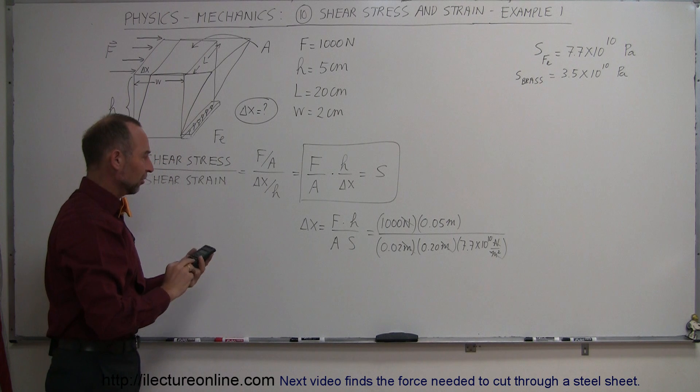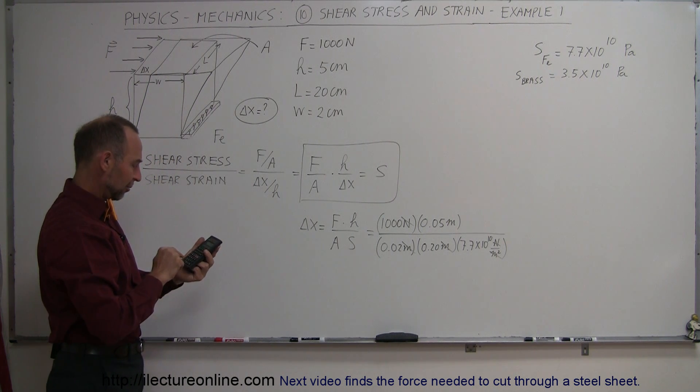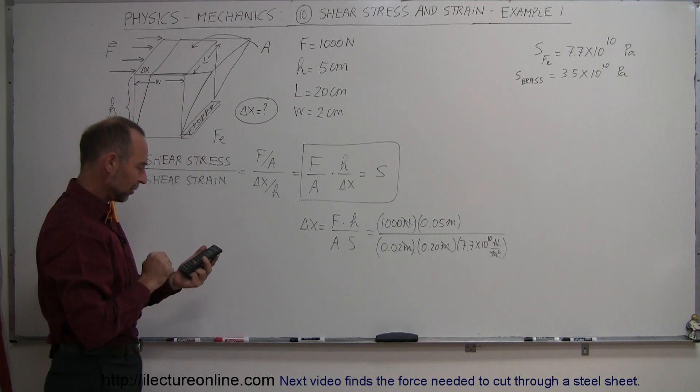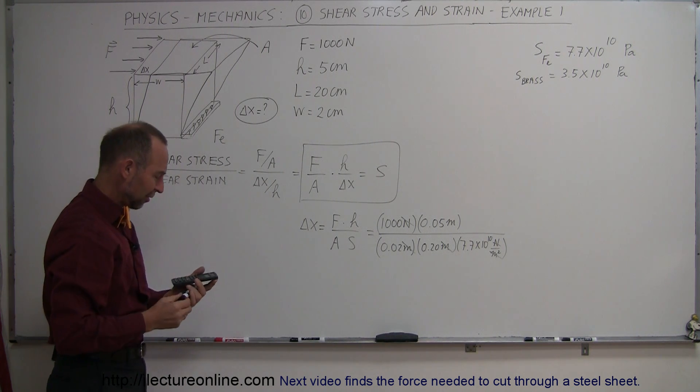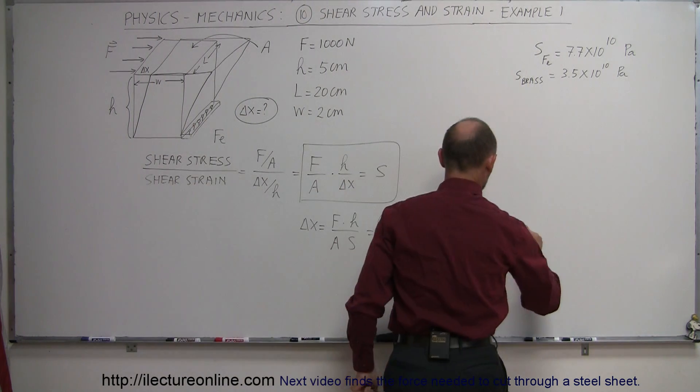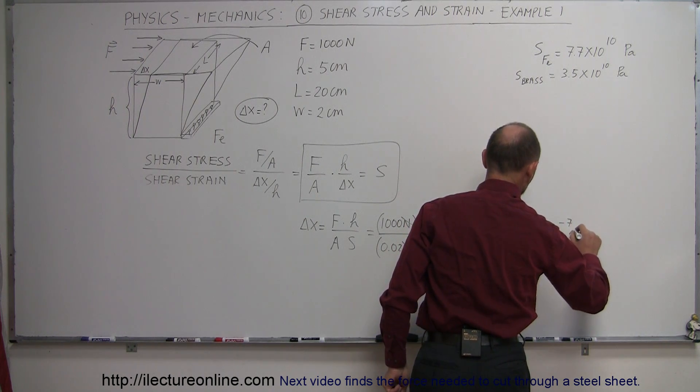So let's find out what the number is. Expected to be small. 1,000 times 0.05, divided by 0.02, divided by 0.2, and divided by 7.7e to the 10th, equals—and sure enough, 1.62 times 10 to the minus 7, that's a very tiny number. So 1.67 times 10 to the minus 7 meters.